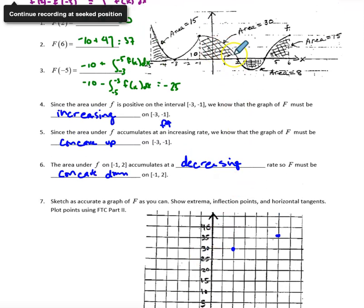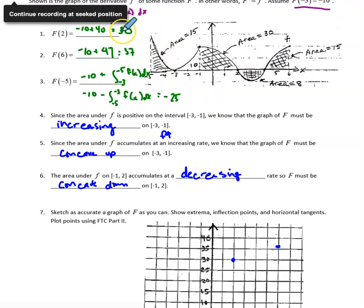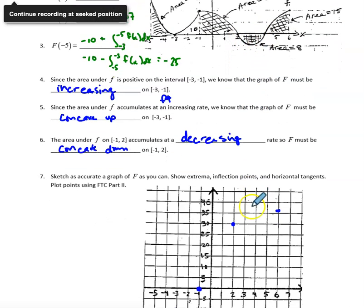We can also figure out big F of 4: we take big F of 2, which was 30, and subtract 8 from it for the net signed area being below the x-axis. So big F of 4 is going to be 22. These are all the points we can plot on the function. Now we can worry about increasing, decreasing, and concavity.